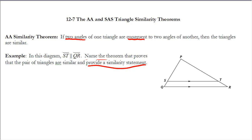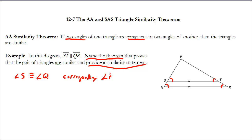To do that, we first need to establish a few things. Since these lines are parallel, angle S and angle Q are congruent because they are corresponding angles. Similarly, angle T is congruent to angle R, also because they are corresponding angles — when lines are parallel, corresponding angles must be congruent.